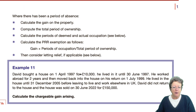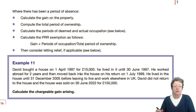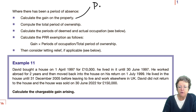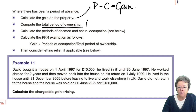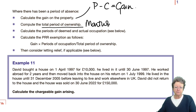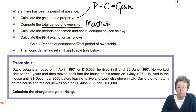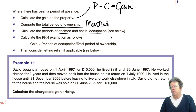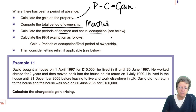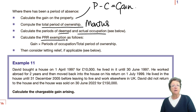So what you do when there is a period of absence is: work out the gain on the property — proceeds minus cost equals gain. Work out the total period of ownership, normally done in months. Then work out the period of deemed and actual occupation. Work out the exemption, because this exempts it from tax. Then consider letting relief if that is appropriate.